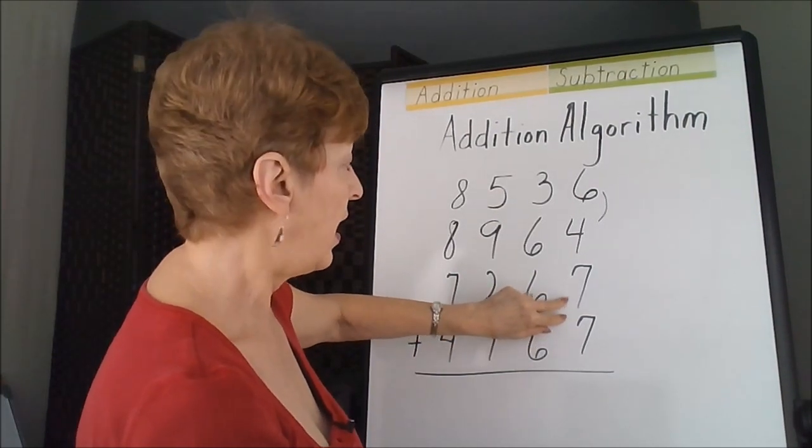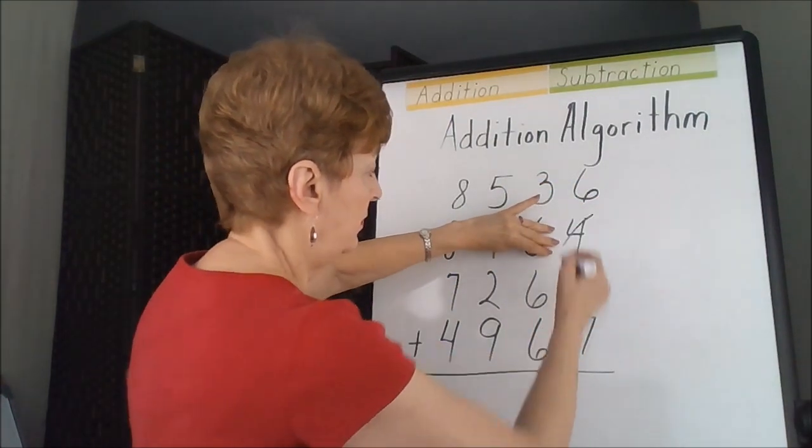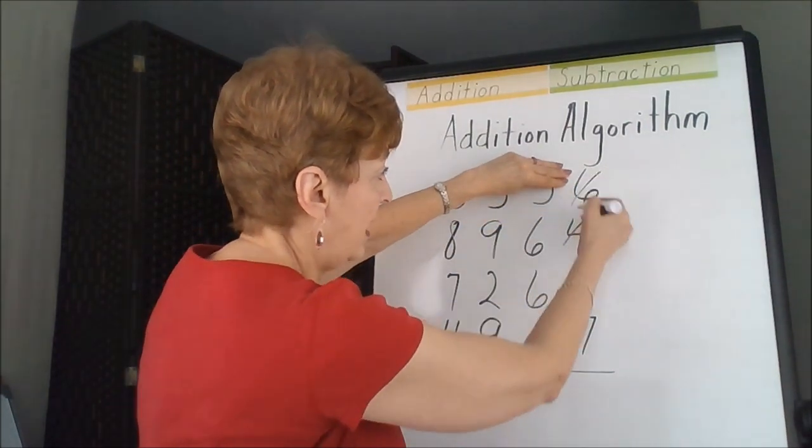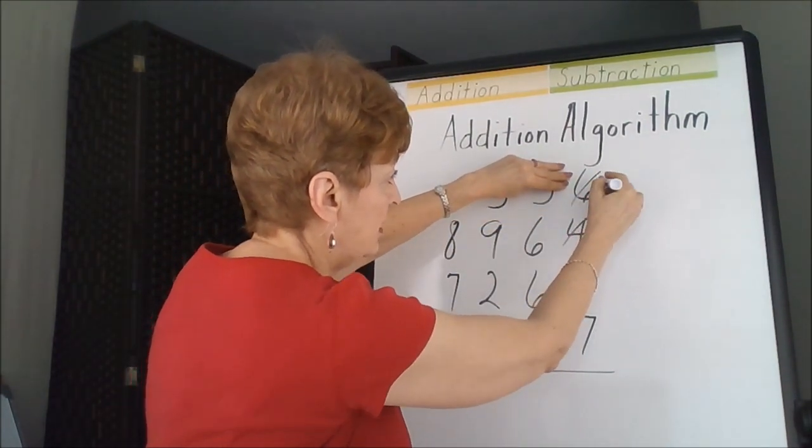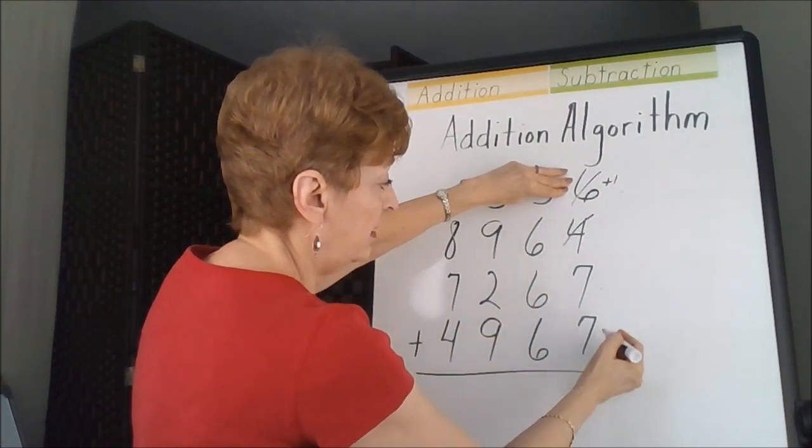Sevens are hard to deal with. I could take the 4 into my fingers, give 1 to the 6. That would make that a 7, so I'd have, this is a plus 1 because I gave it one of my fingers, 7, 7, and 7.